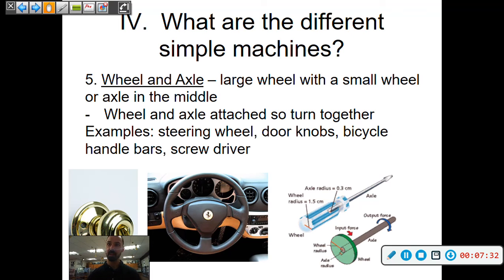So basically a steering wheel, doorknobs, bicycle handlebars because you're rotating that whole handlebar system. A screwdriver also, you're turning that cylinder which then turns basically the end of the screwdriver. Doorknobs also work in the same way.